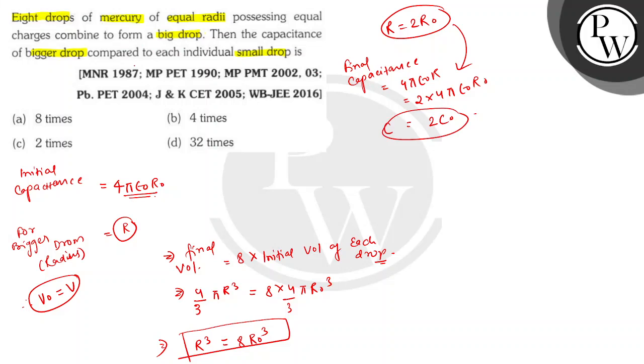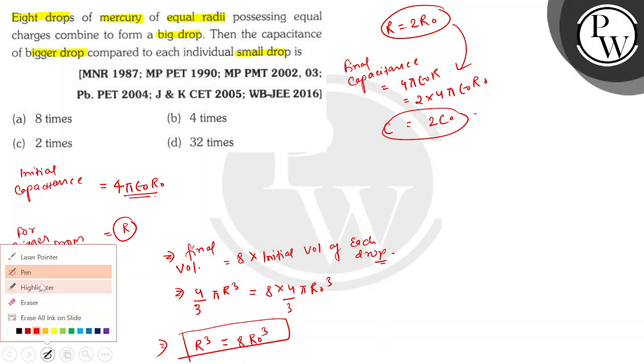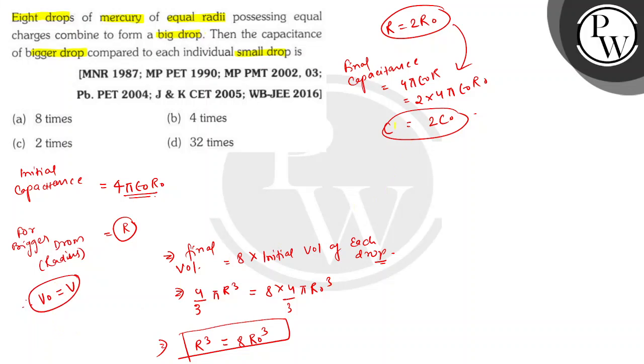Therefore after comparison we know that the final capacitance is two times more than the initial capacitance. So the correct option is C. I hope you all understood this as well. All the best.